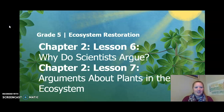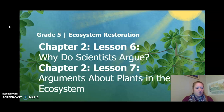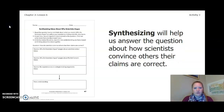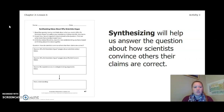Hello 5th graders. This is Chapter 2 Lesson 6 and Lesson 7 of the Ecosystem Restoration Unit. Remember, we are combining lessons 6 and 7 — doing all activities for lesson 6 and skipping activity 2 for lesson 7. We just read Why Scientists Argue. Now you will be synthesizing to help answer the question about how scientists convince others their claims are correct. Turn to page 47 of your Ecosystem Restoration Workbook or page 5 of your Chapter 2 Lesson 6-7 Activity Packet.